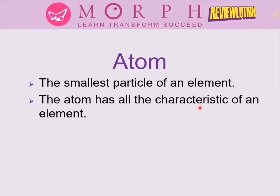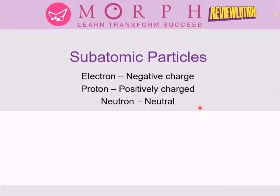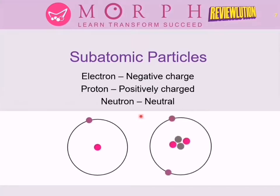Atoms also have sub-particles. There are three well-known ones: electron, proton, and neutron. The electron is negatively charged, the proton is positively charged, and the neutron is neutral — it has no charge. In this figure, there are two atoms. In the first atom, there is one proton and one electron. In the second atom, there are two protons, two electrons, and two neutrons.